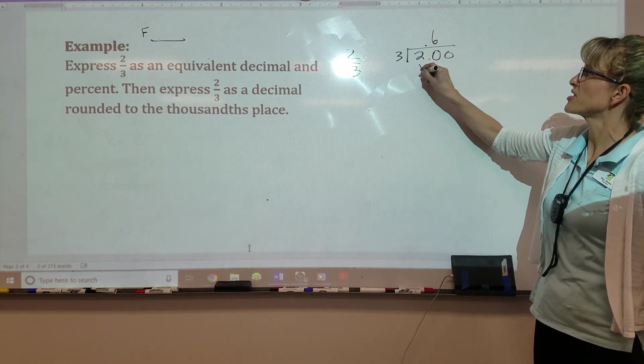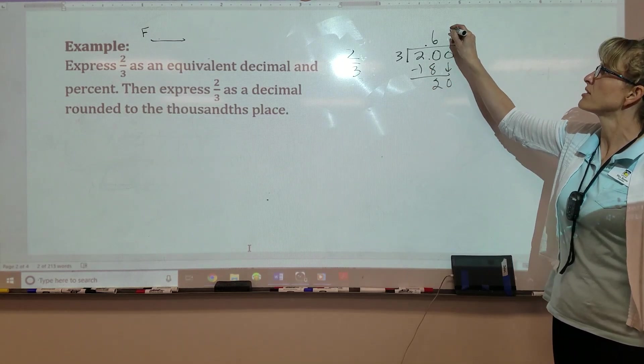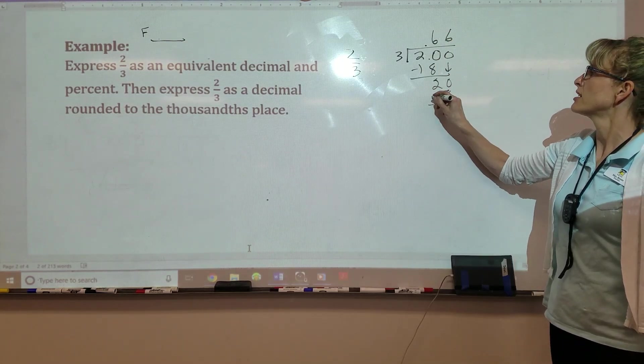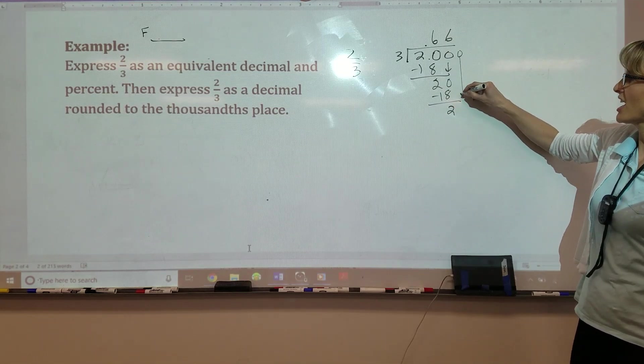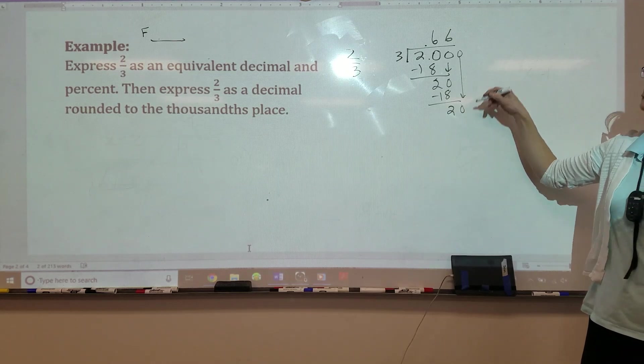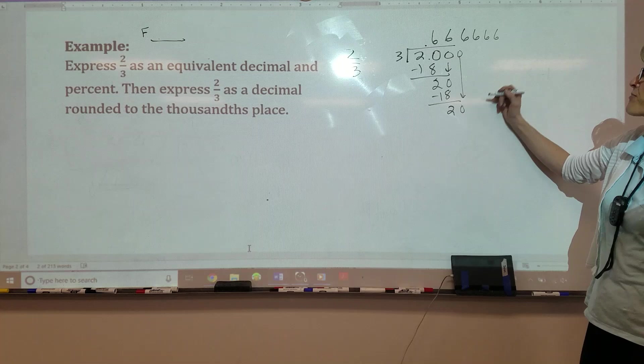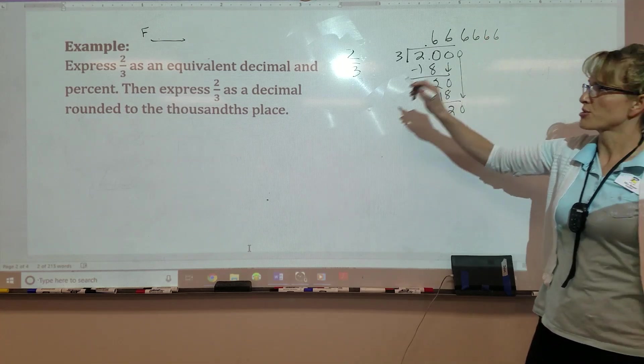So that's why we have to bring up the decimal and throw some zeros in there. Three into 20 goes six times. That's 18. Subtract. We get two. Bring down the zero. Three into 20 goes six times. 18. Subtract. We bring it to two. And then I start noticing, hey, it's 20, 18, 20, 18, 20, 18 every time. So then I'm going to go, okay, it's going to always repeat with my sixes.